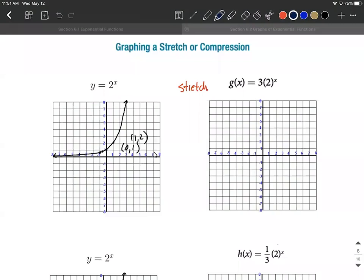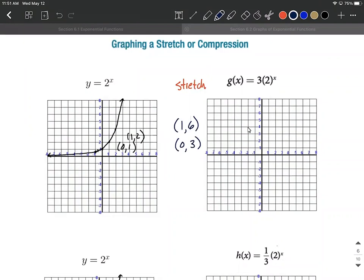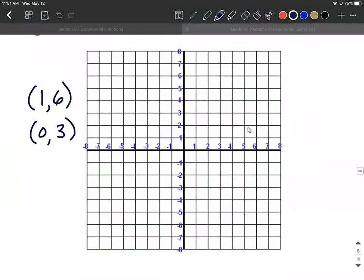Using these key points, we can get additional points on this graph by multiplying each y-value by 3. So the key points are: (1, 2) times 3 gives us (1, 6). For the second one, (0, 1), the y-value multiplied by 3 gives us 1 times 3 equals 3. So our key points are (0, 3) and (1, 6).